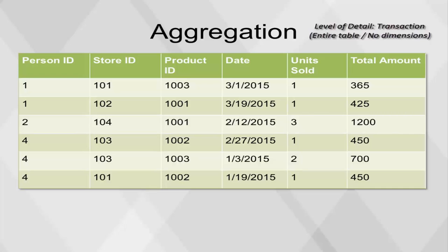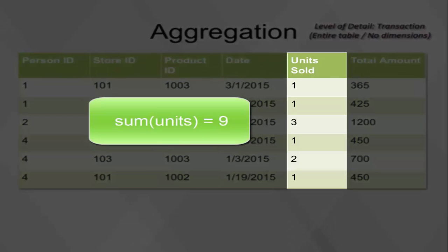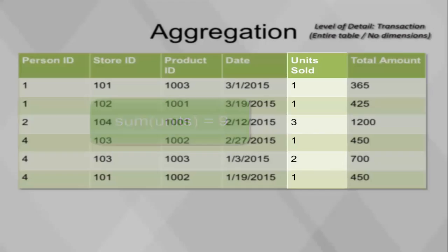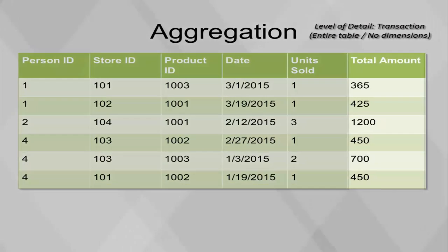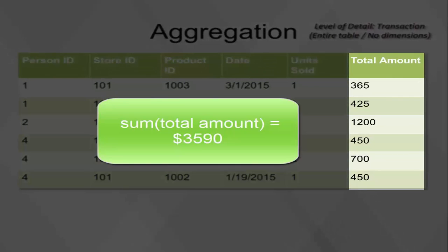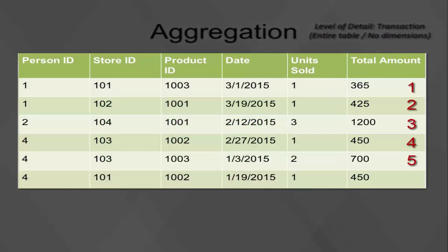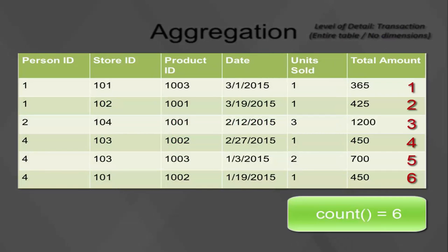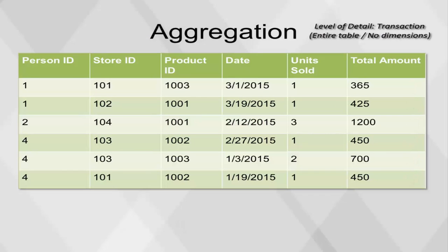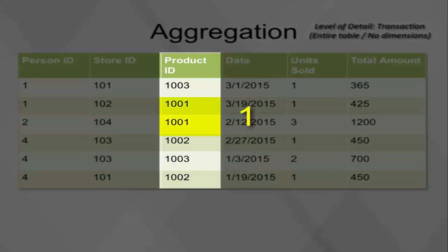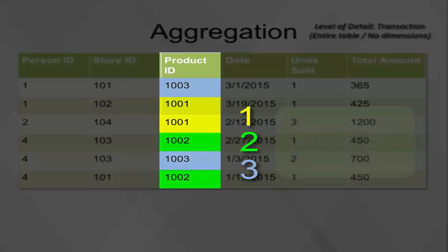How many units were sold? 9. How much total revenue? $3,590. How many transactions? 6. How many distinct products were sold? 3.